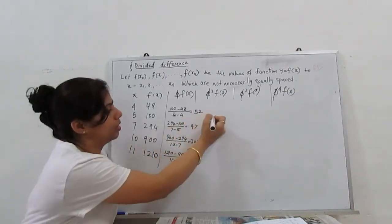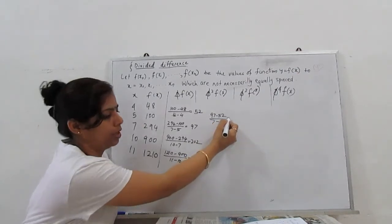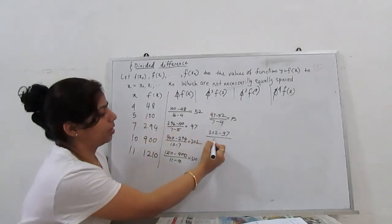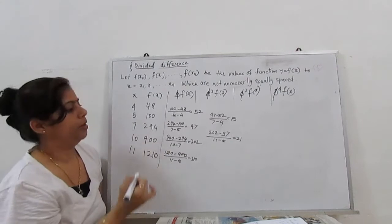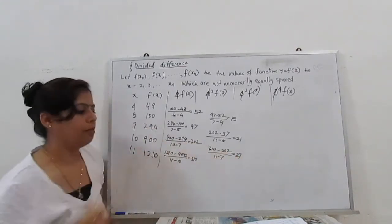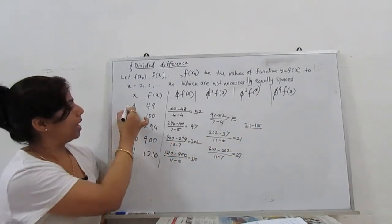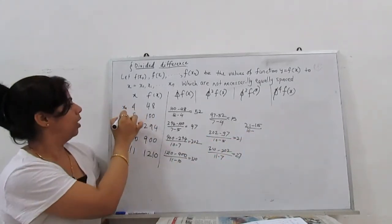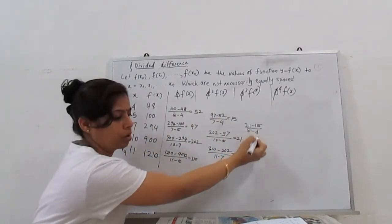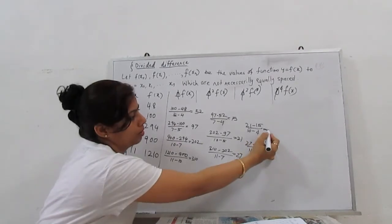For the second-order divided differences: (97-52)/(7-4) = 15; (202-97)/(10-5) = 21; (310-202)/(11-7) = 27. For the third-order: (21-15)/(10-4) = 1 and (27-21)/(11-5) = 1. So both third-order values are 1.